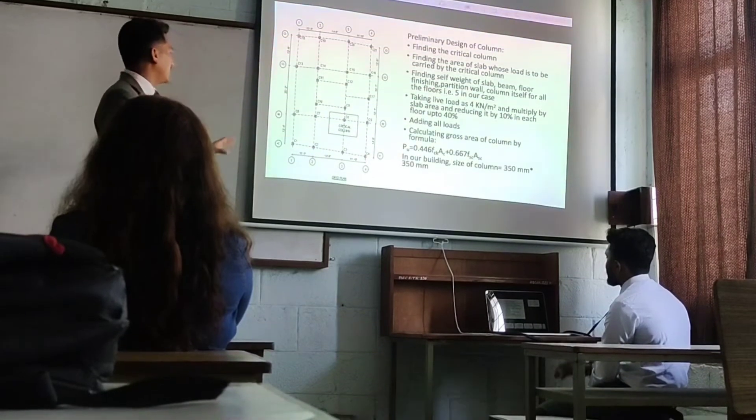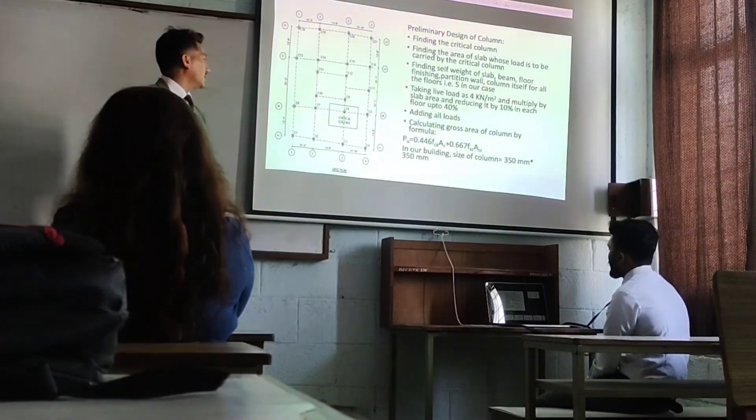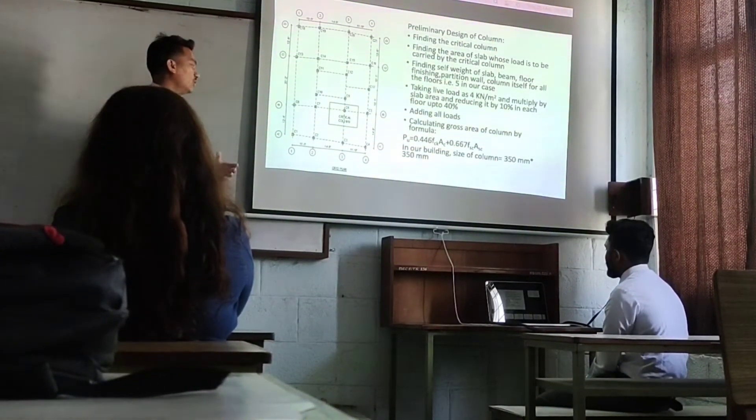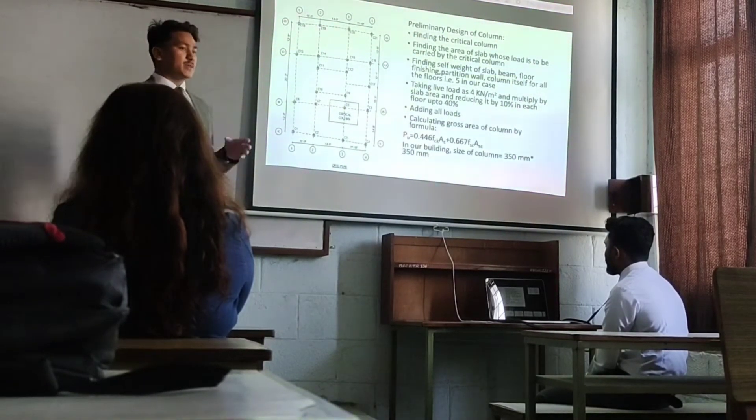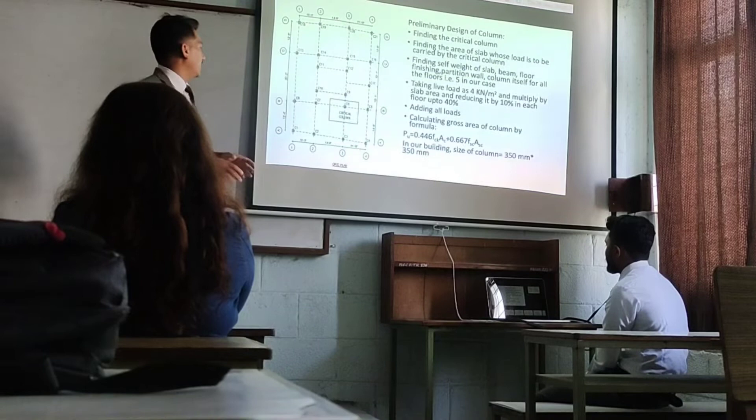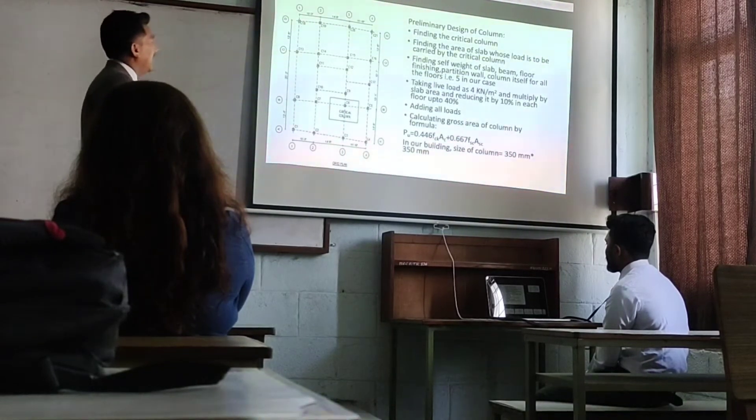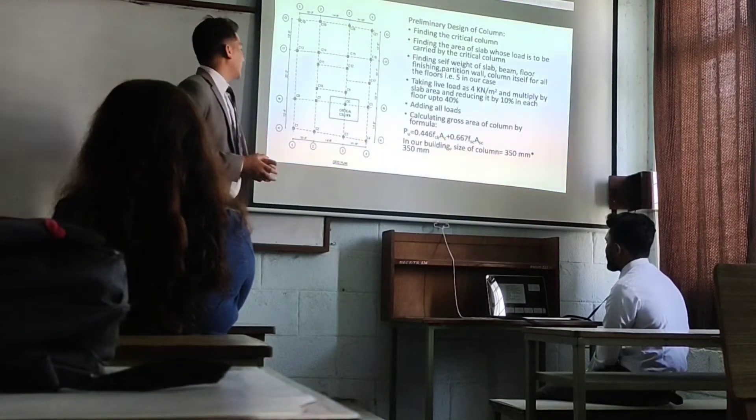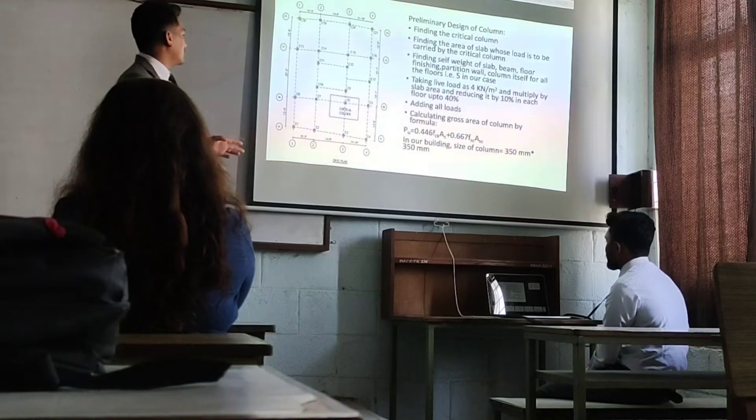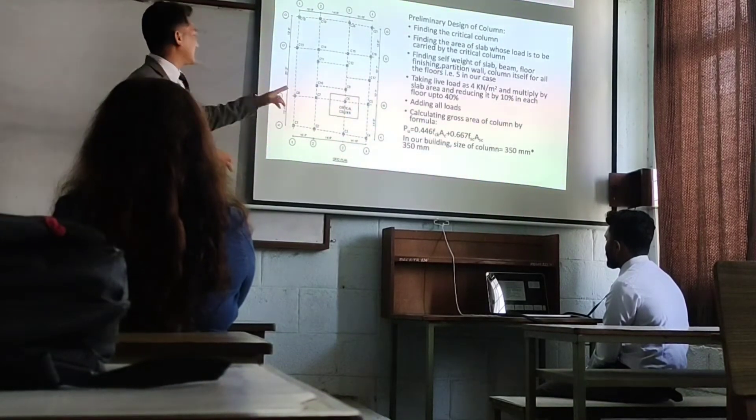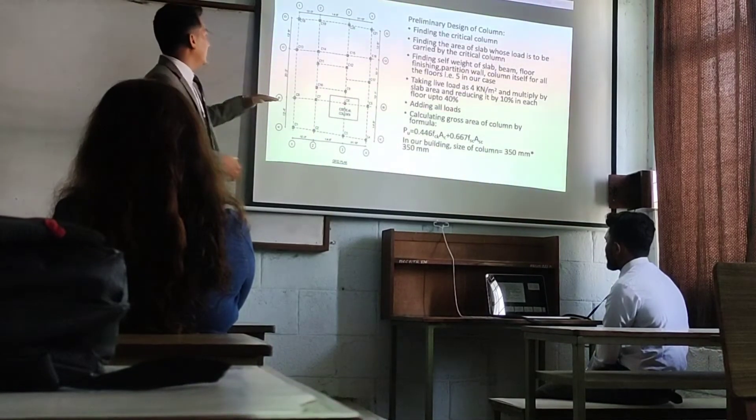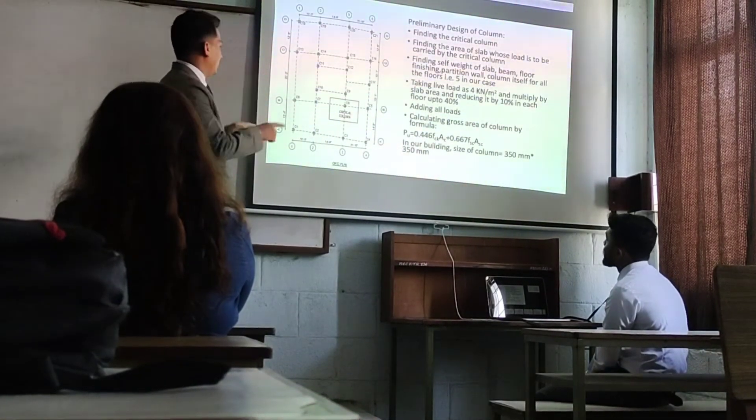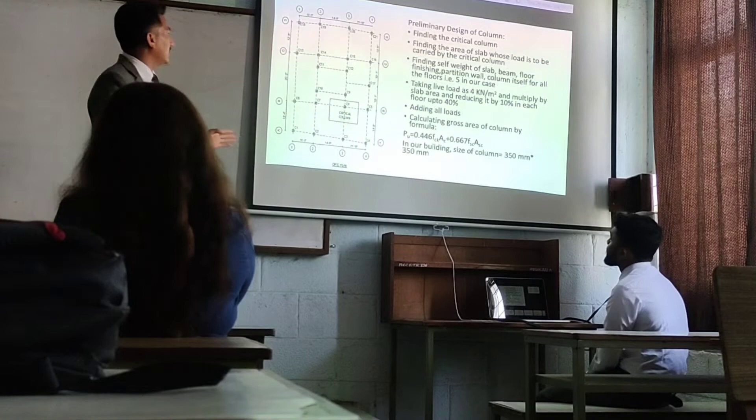First of all, we selected the critical column, which is the column that covers the maximum area where the maximum load is acting. We selected the critical column and then found the area of the slab. Column C6 is the critical column. For the critical column, half portion of the slab area is calculated.